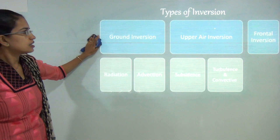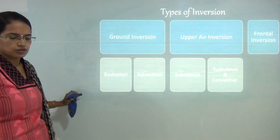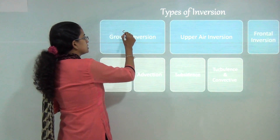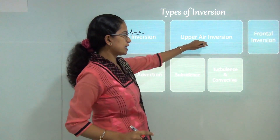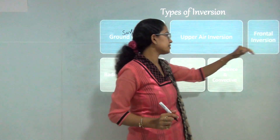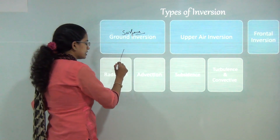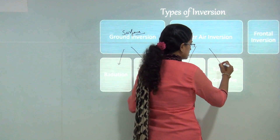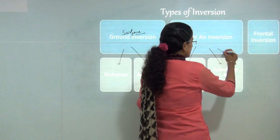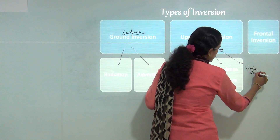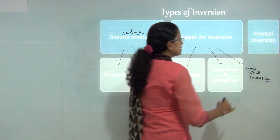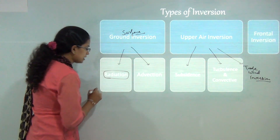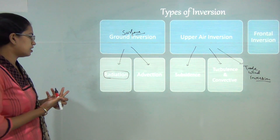Now let's move on to the types of inversion. We can broadly classify inversion into three types: ground inversion or surface inversion, upper air inversion, and frontal inversion. Ground or surface inversion can be further subdivided into radiation inversion and advection inversion. Upper air inversion involves subsidence, turbulence, convective inversion, and trade wind inversion. Finally there is frontal inversion.